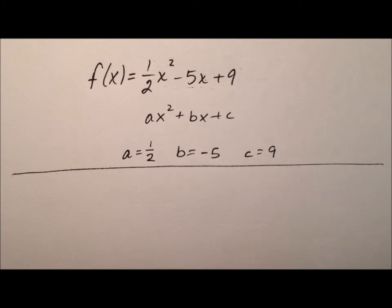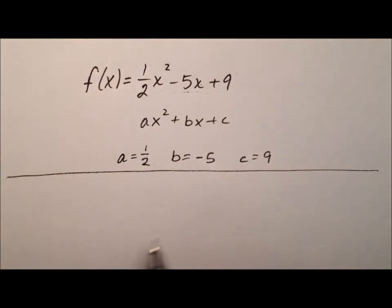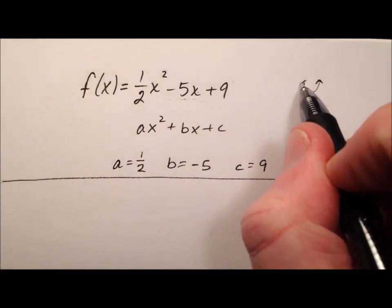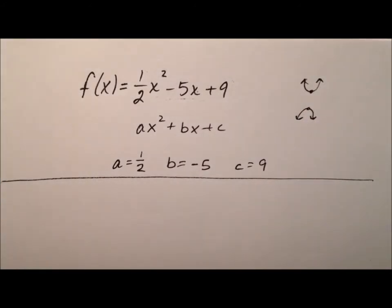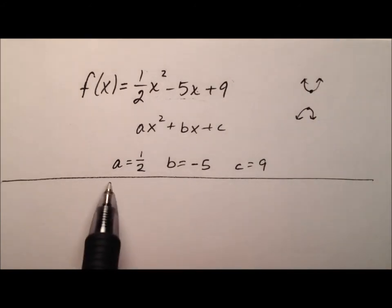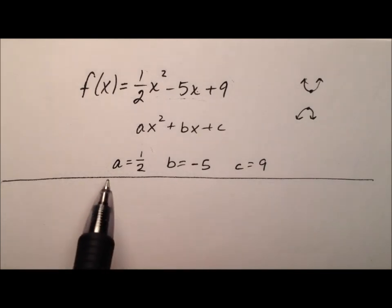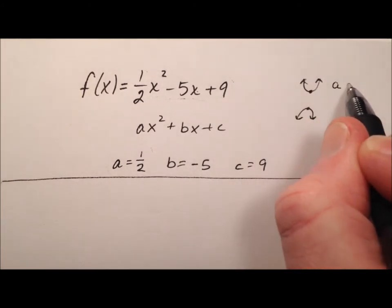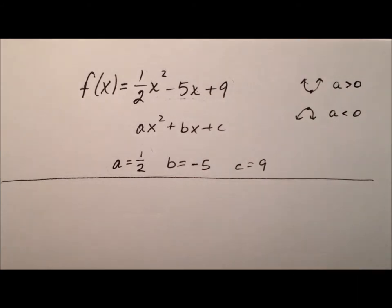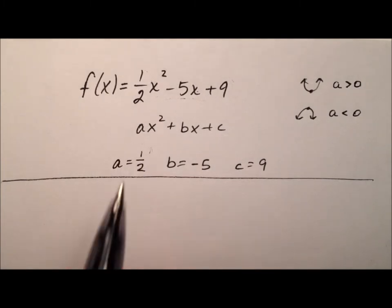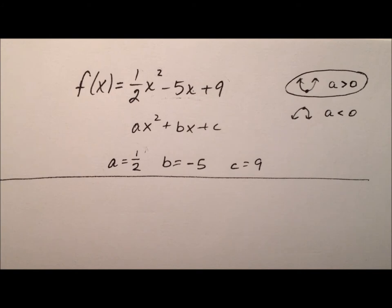The graph of a quadratic function is going to be a parabola. Since it's a function, this parabola is either going to open upward or downward, and its vertex will be at the top or bottom depending on which. The a value, or leading coefficient, determines which direction the parabola opens. If it opens upward, the leading coefficient is greater than 0 (positive); if it opens downward, it's less than 0 (negative). Our a value is ½, which is positive, so this parabola is going to open upward.